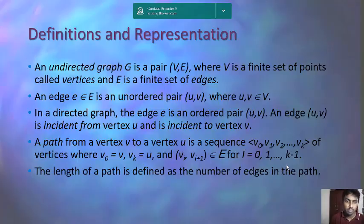An edge E belongs to E and is an unordered pair — a pair of U and V, where U and V both belong to the set of vertices. So we have one point U and one point V, and the edge joining both points is known as E, belonging to the edge family.